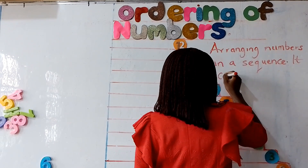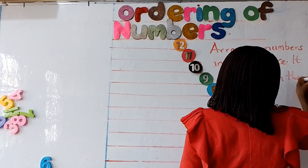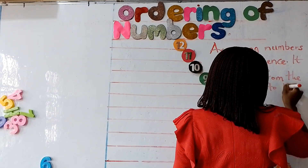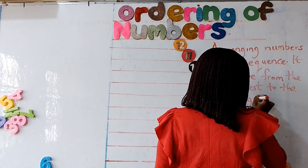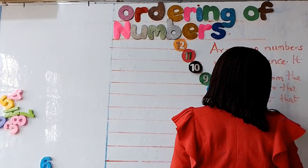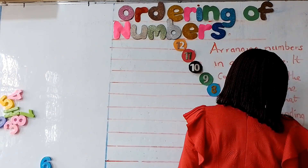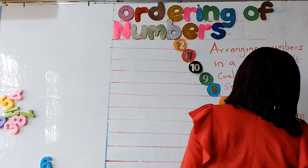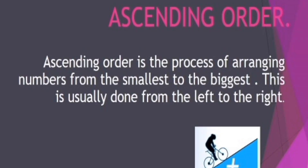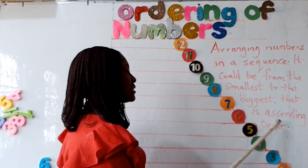It could be from the smallest to the biggest. That is ascending order. Arranging numbers in a sequence — that is simply ordering all numbers. It could be from smallest to the biggest, that is ascending order.